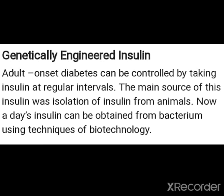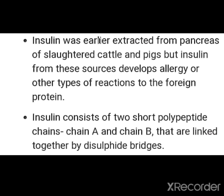Nowadays, insulin is obtained from bacteria using techniques of biotechnology — rDNA technology is used to obtain insulin. Earlier, insulin was extracted from the pancreas of slaughtered cattle and pigs. But when that insulin was injected into humans, the human body developed allergies against that animal insulin, treating it as a foreign protein, and the human body did not easily accept it.